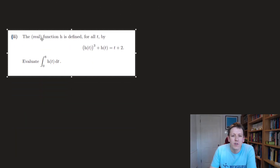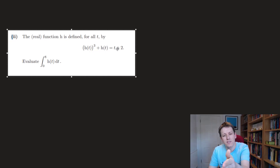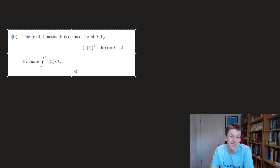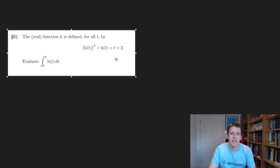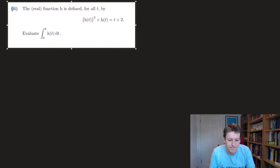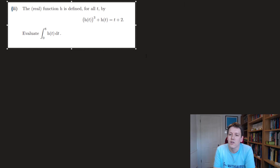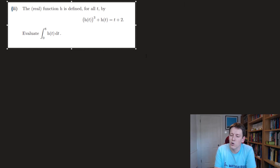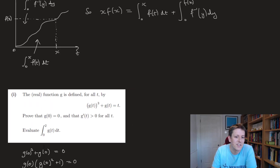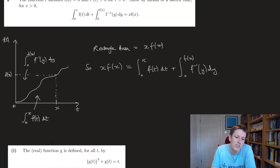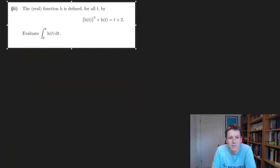Part 2: the real function h is defined by h(t)³ + h(t) = t + 2, and we want to evaluate the integral from 0 to 8 of h(t) dt. It seems clear we need to repeat the argument from the first part — but we really must check all the assumptions hold, since we could only apply the result because g(0)=0 and g'(t)>0. We might need to adapt if that's not true.